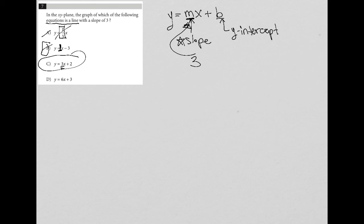And then we can see choice D. The slope here would be six. So that's why D is incorrect.